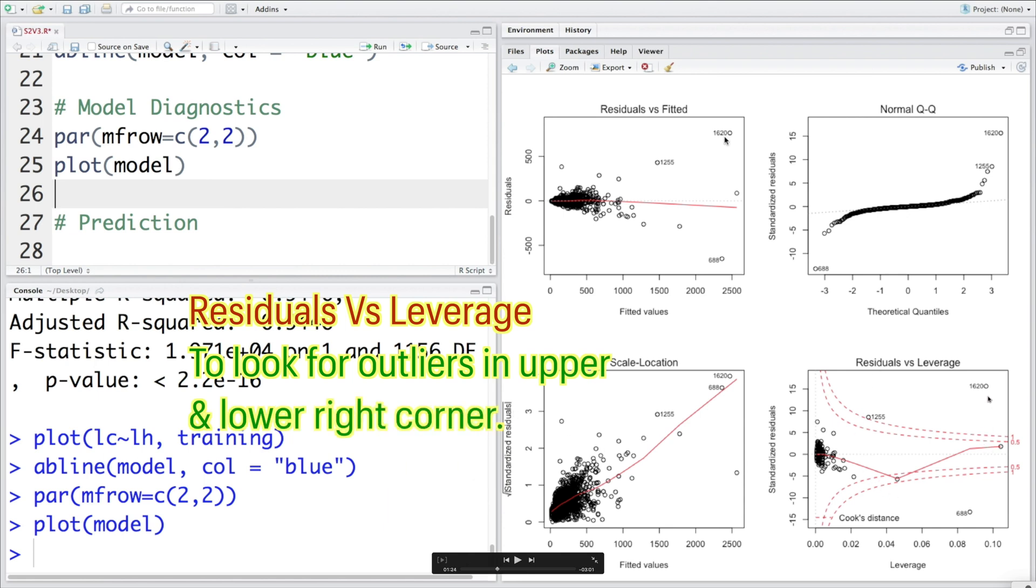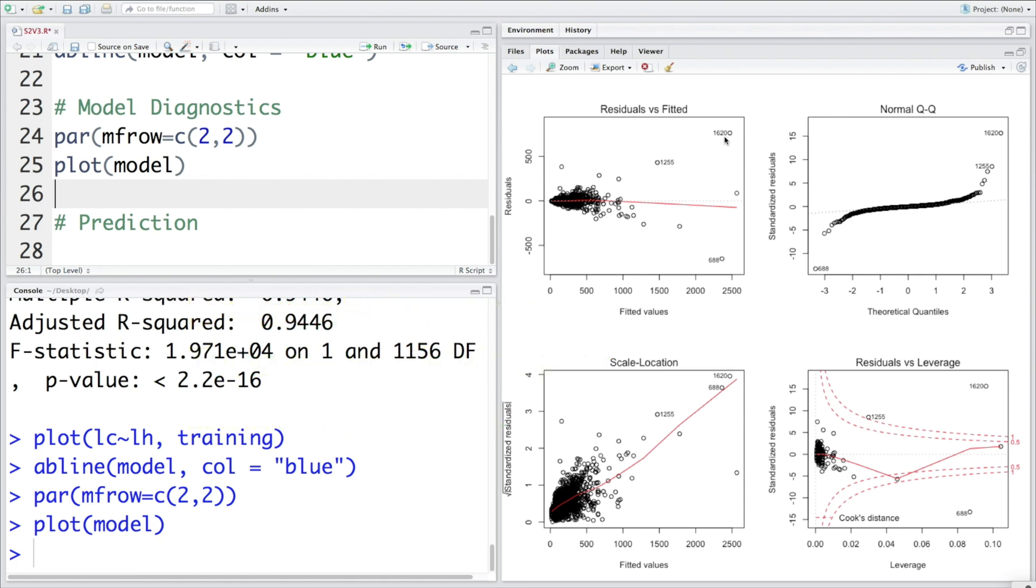In this plot, we need to look at values that are outside the dotted lines, especially towards the right upper corner and right lower corner. The dashed lines are Cook's distance. If we have points which are outside Cook's distance, those data points do have a big impact on regression outcome. If these data points are excluded, the regression results will be different. Usually with data, it may not be possible to get the perfect situation with these plots, but they give some indication.